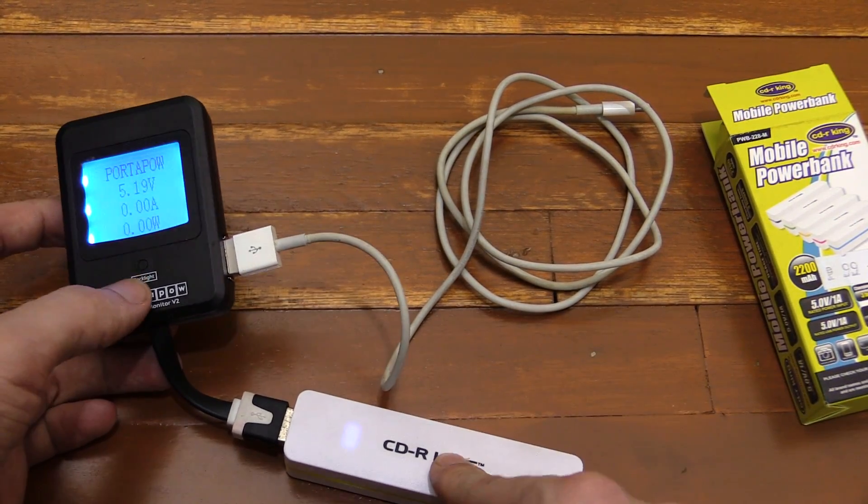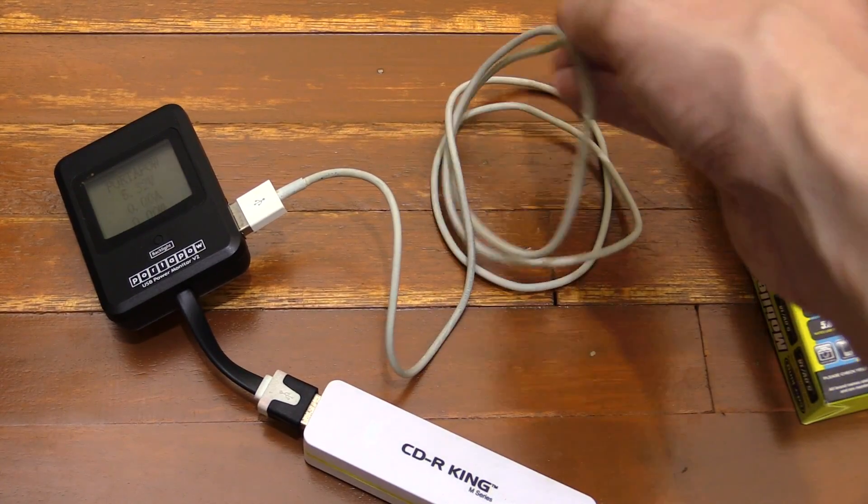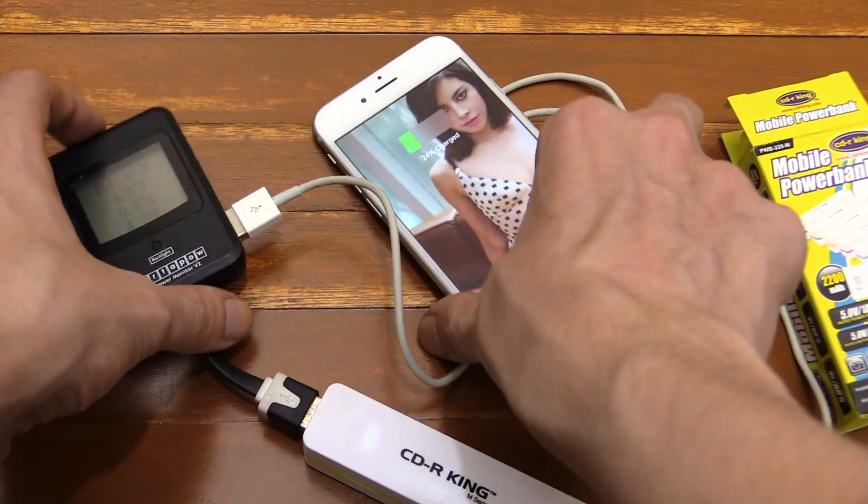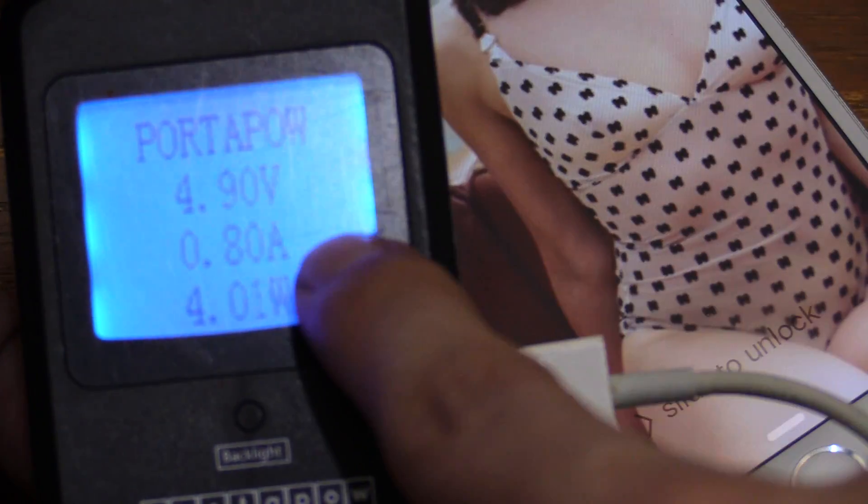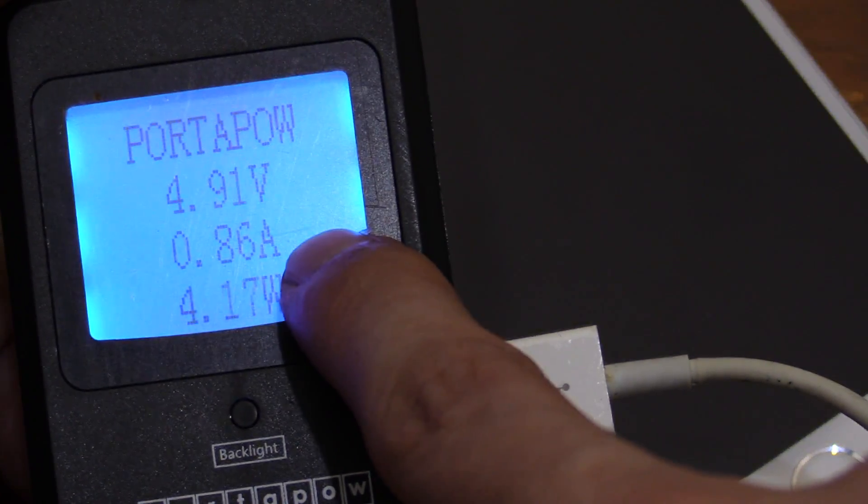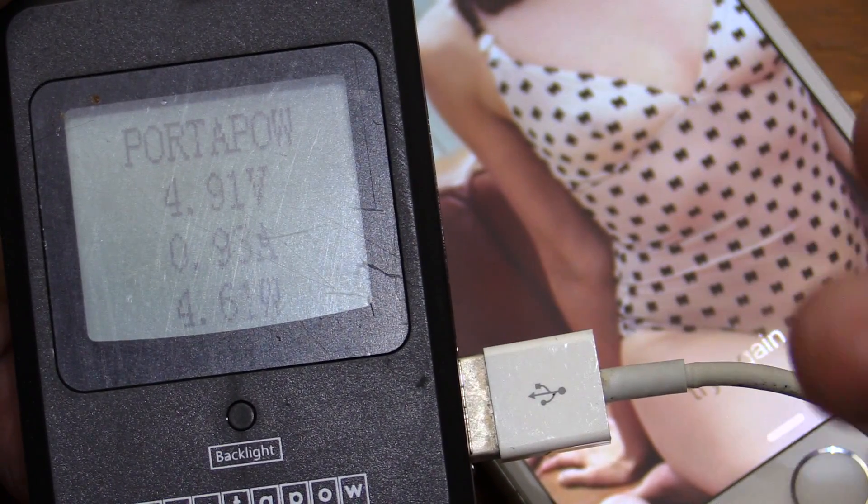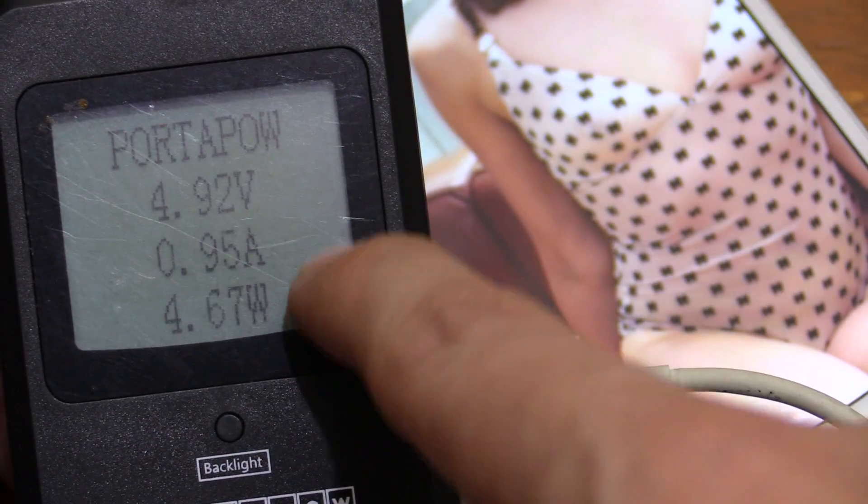I guess they probably just had customers go back in saying, oh, it only charges it like halfway or something. Anyway, so let's use my wattmeter to measure if we can get that one amp out. So let me zoom in on this. Okay, turn on the backlight. We're getting around 0.8, 0.9. It's fluctuating a little bit. That also depends on the phone itself or whatever you've connected. So I think that's close enough to one amp to say that's good.